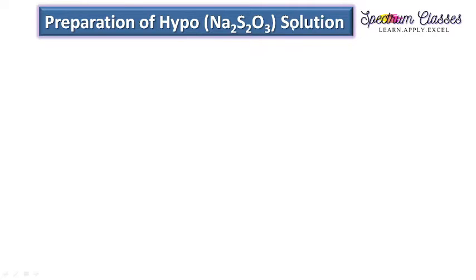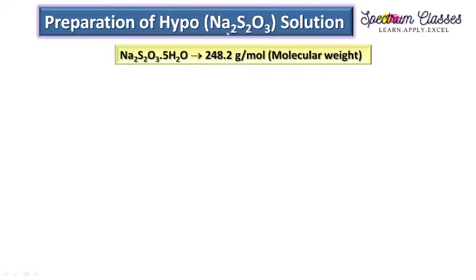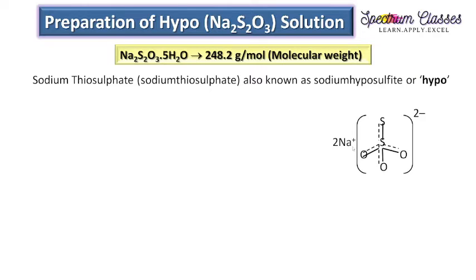Before discussing the preparation of hyposolution or sodium thiosulfate solution, I am giving you a brief discussion about sodium thiosulfate. Sodium thiosulfate has the formula Na2S2O3, sometimes given as 3H2O and sometimes as 5H2O. You must check the pack you have for sodium thiosulfate because according to the water molecules your molecular formula will be changed. I have a pack of Na2S2O3·5H2O pentahydrate and its molecular weight is 248.2 grams per mole. Its structure shows the thio unit attached with 2 sodium atoms. Sodium thiosulfate is also known as sodium hyposulphite, which is why we sometimes abbreviate it as hyposolution.